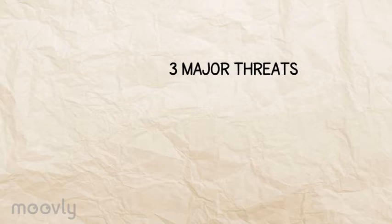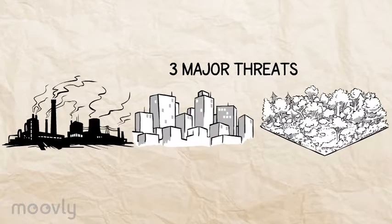Here are three major threats to our Earth and all that live in it, each caused by our own kind: air pollution, deforestation, and urbanization.